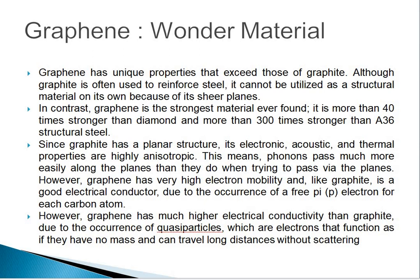Since graphite has a planar structure, its electronic, acoustic, and thermal properties are highly anisotropic. Anisotropy is the property of a substance to exhibit variation in physical properties along different molecular axes. This leads to different physical and chemical properties in single crystals along different axes. This means phonons pass much more easily along the planes than they do when trying to pass between the planes. However, graphene has very high electron mobility and, like graphite, is a good electrical conductor due to the occurrence of free pi electrons for each carbon atom.